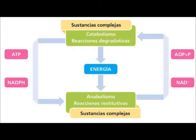We have to define catabolism — the degradative phase — in which the organic nutrients: glucides, lipids, and proteins become smaller and simpler products, like lactic acid, CO2, or NH3. Catabolic routes normally release energy. Part of that energy is conserved through the formation of ATP and reduced electron carriers such as NADH, NADPH, and FADH2. The rest is normally lost as heat. Catabolic routes are convergent, meaning they converge toward common products — almost all end up producing CO2 and water.